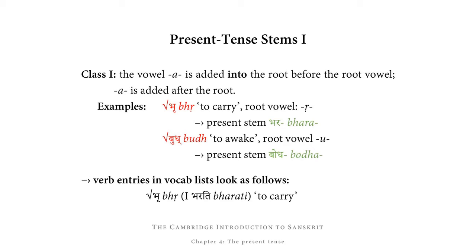If you want to find a class 1 verbal root in a vocab list or a dictionary, it would look as follows. You would be given the root marked by the root symbol, told explicitly what class it is, then explicitly given a present tense form — by convention, the third person singular, so bharati — and then given the translation, which in this case would be 'to carry.' Verbal entries include the root, mention of the class, the third person singular present form, and the meaning.